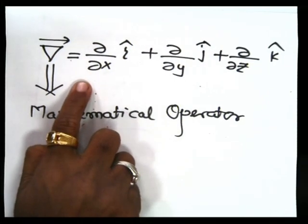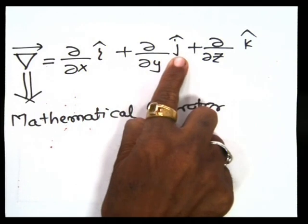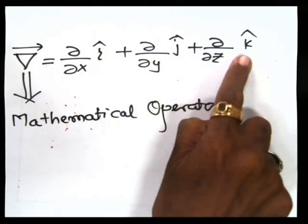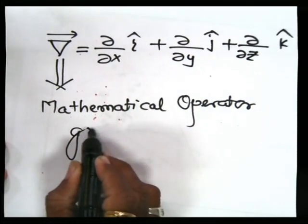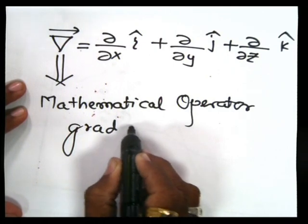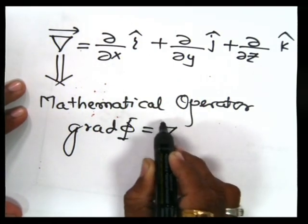Now, a very important relation — grad φ equals nabla φ — can be obtained with the help of the mathematical operator nabla that we already studied. We know the equation of nabla. Nabla is ∂φ/∂x î + ∂φ/∂y ĵ + ∂φ/∂z k̂. This is a mathematical operator and I want to prove that grad φ is equal to nabla φ.